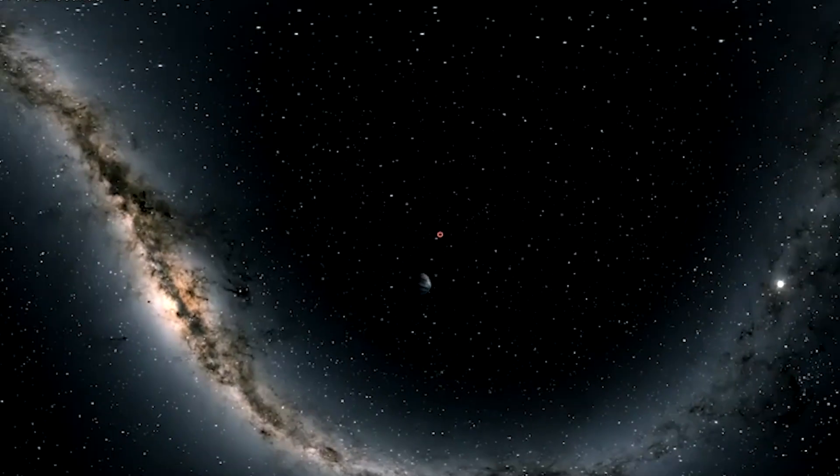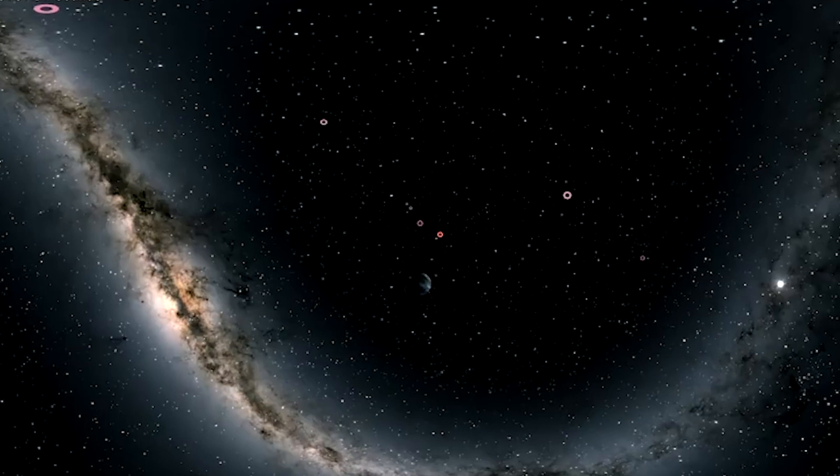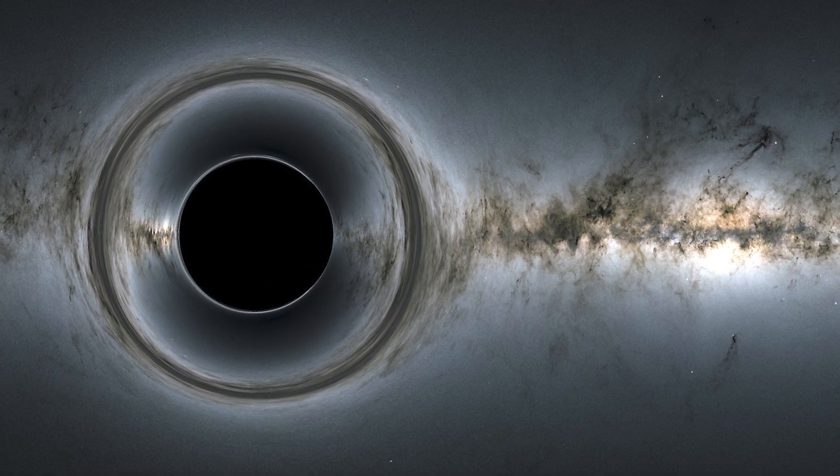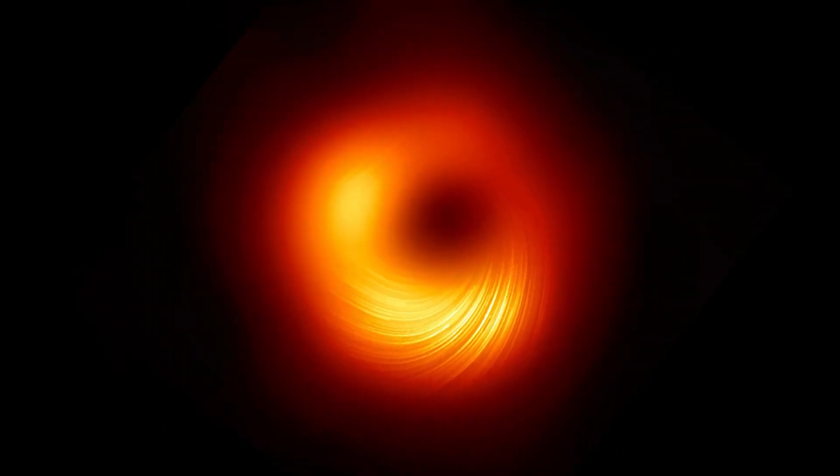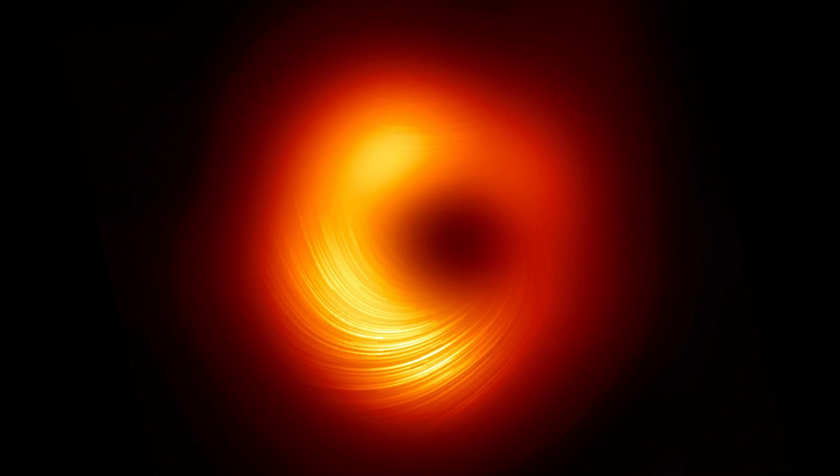The only way to locate a black hole would be to look for the radiation flashes that are emitted when a hapless comet passes the black hole's event horizon, because black holes are, by definition, so dense that even light cannot escape their gravitational pull.